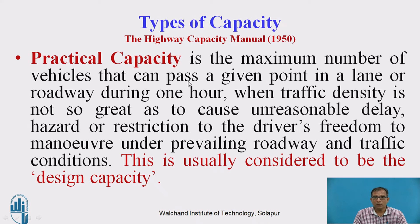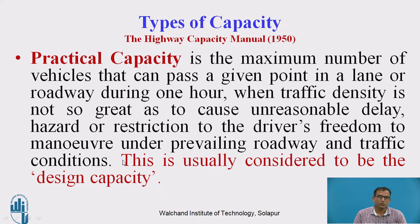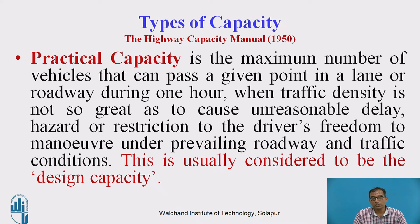Practical capacity is what we actually use — neither basic nor possible capacity. It is the maximum number of vehicles that can pass a given point in a lane or roadway during one hour when the density is not excessive, without causing unreasonable delay, hazard, or restriction to driver freedom to manoeuvre under prevailing roadway and traffic conditions. This is usually considered the design capacity, measured with respect to existing road conditions.